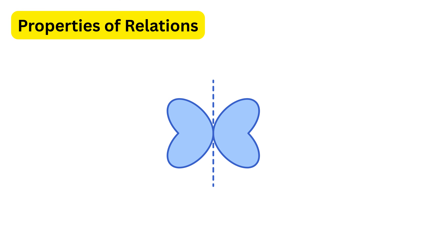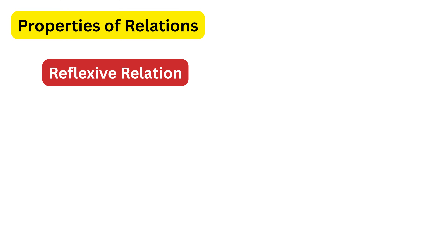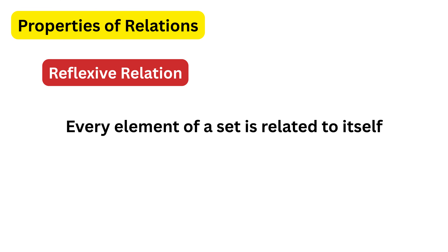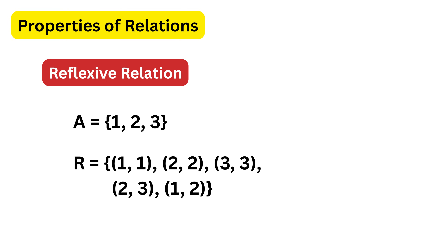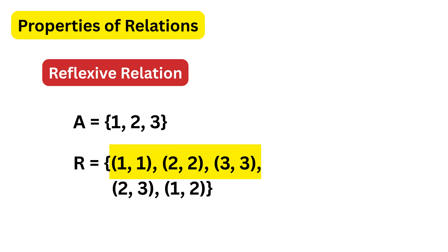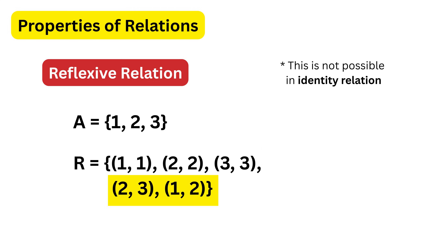Now we move to relations that are more about patterns. A reflexive relation is a relation where every element of a set is related to itself. That means for every element x in the set, the ordered pair x comma x must be present in the relation. For set A containing 1, 2, and 3, the pairs 1 comma 1, 2 comma 2, and 3 comma 3 ensure the relation is reflexive. The relation can also have other extra pairs — a reflexive relation must include all self-pairs but can have additional ones as well.